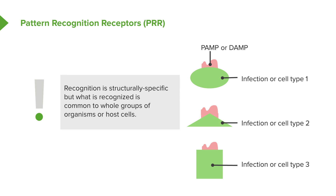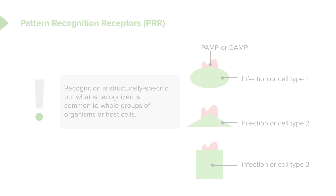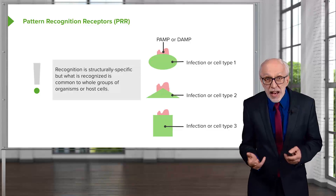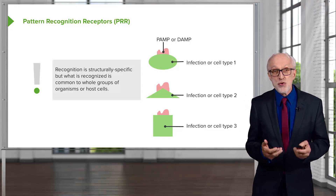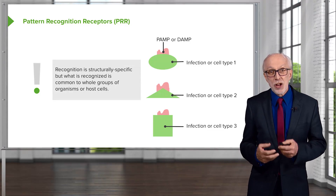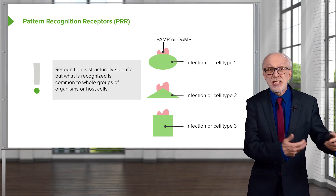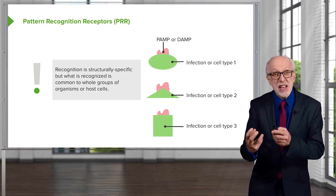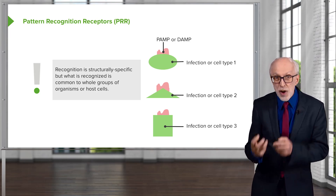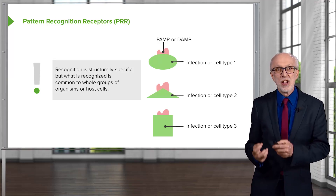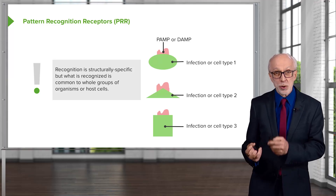For example, one pathogen-associated molecular pattern is lipopolysaccharide, or LPS, found on gram-negative bacteria. Lots of different types of gram-negative bacteria share LPS, but the recognition of LPS is very, very highly specific. So recognition is structurally specific, but what is recognized is common to whole groups of organisms or host cells.